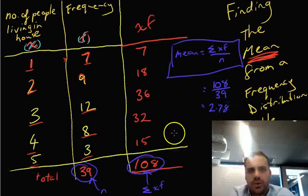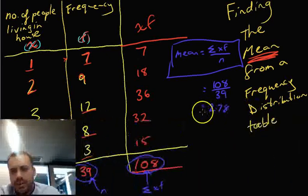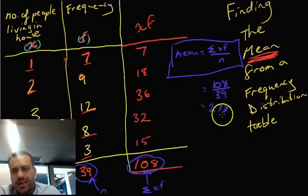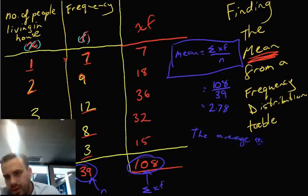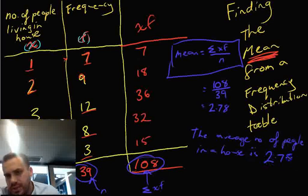Now, it's important that you understand what that number means. 2.78 means that the average number of people in a house is 2.78.